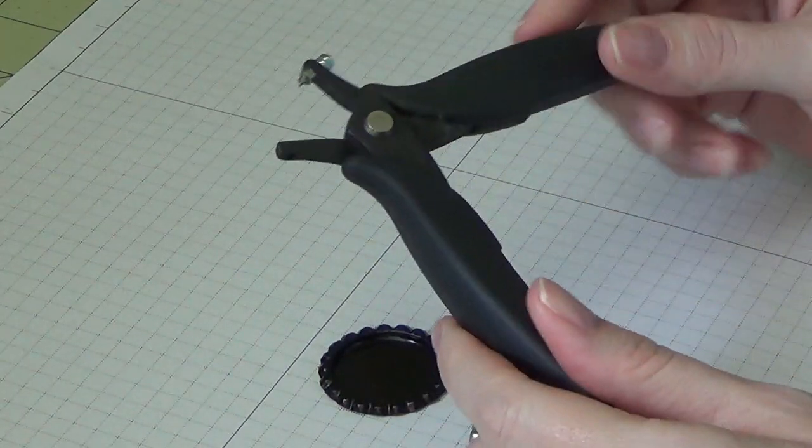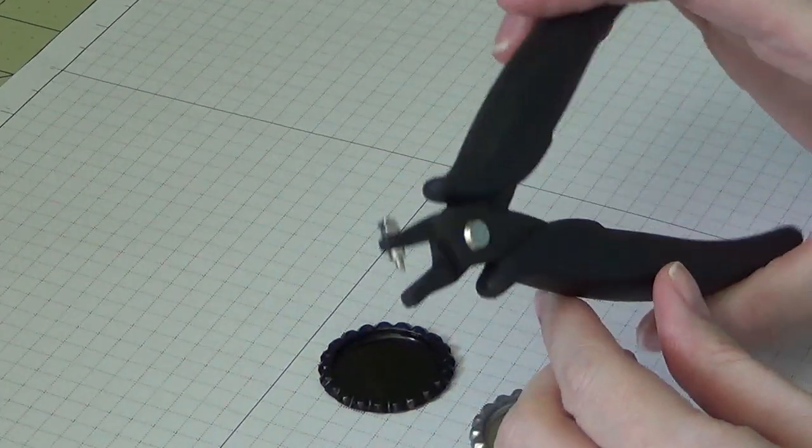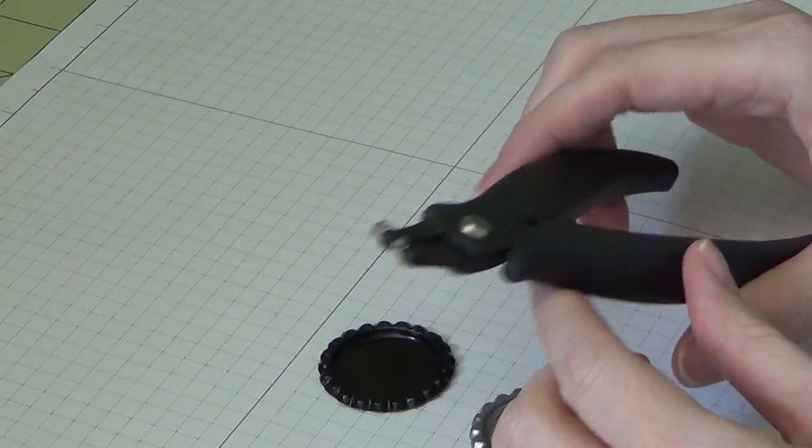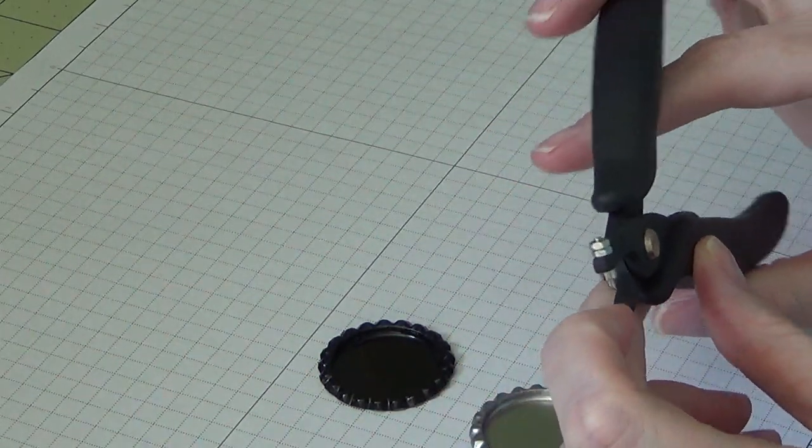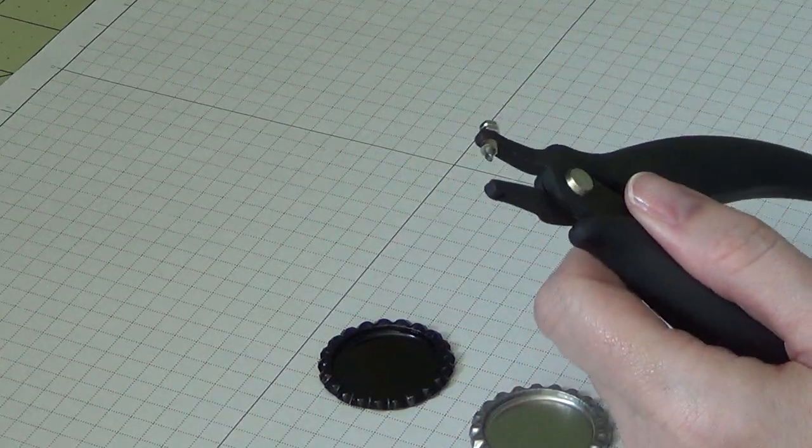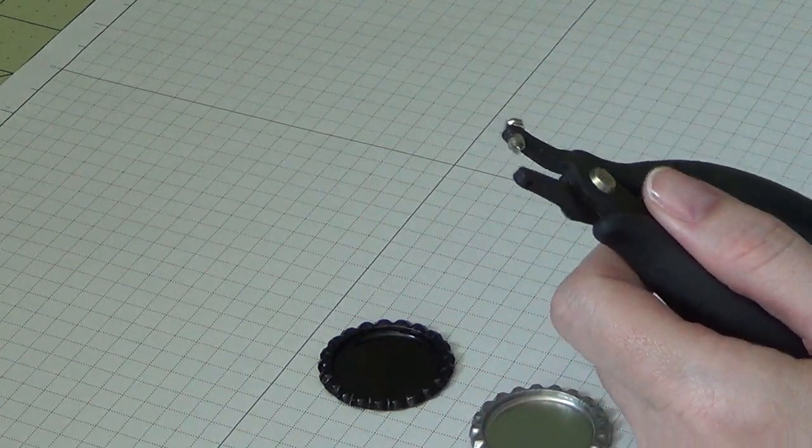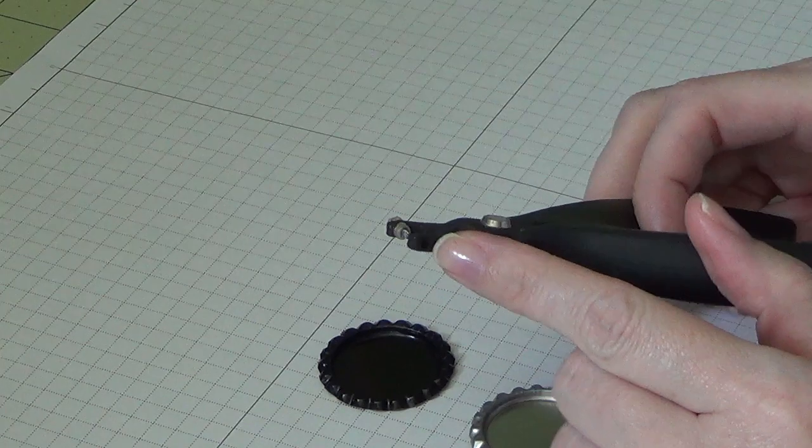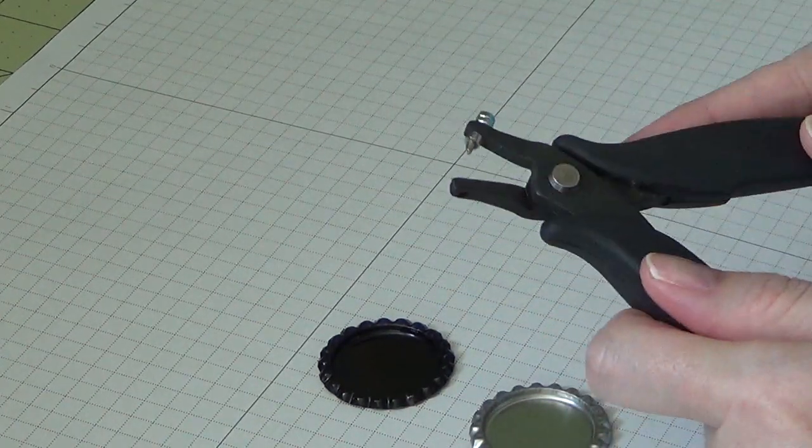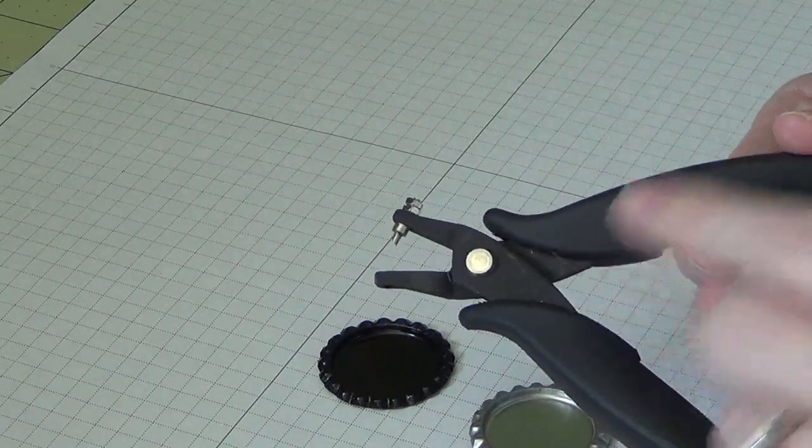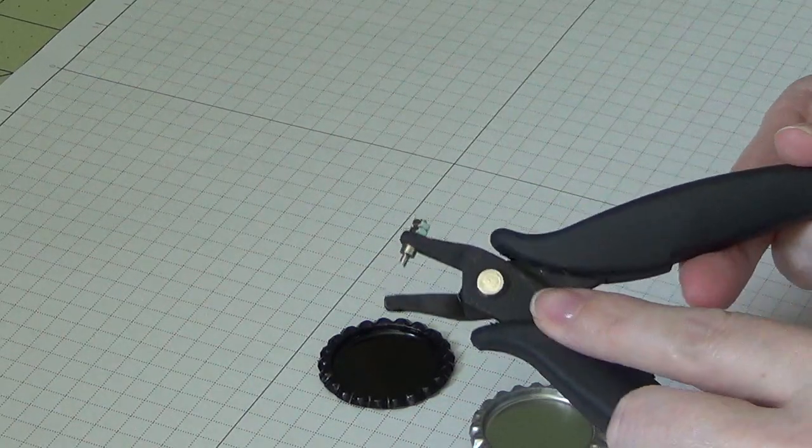I use this little bottle cap hole punch thing. It's about a sixteenth of an inch, maybe an eighth of an inch. I think it's less than an eighth of an inch—a one-sixteenth little bottle cap hole puncher. This actually came in a kit that I purchased from Hobby Lobby.